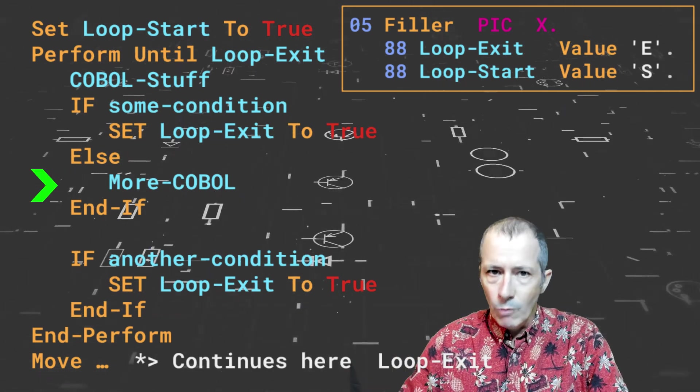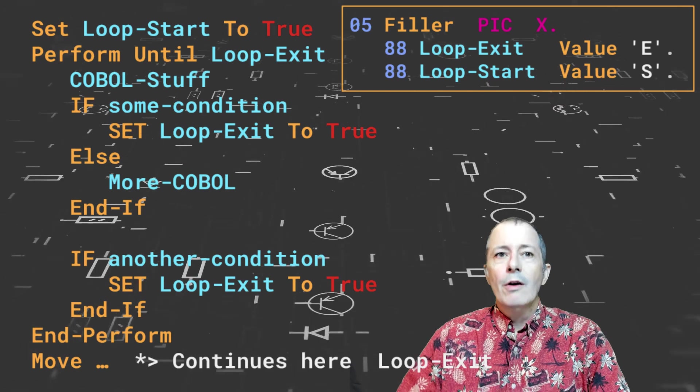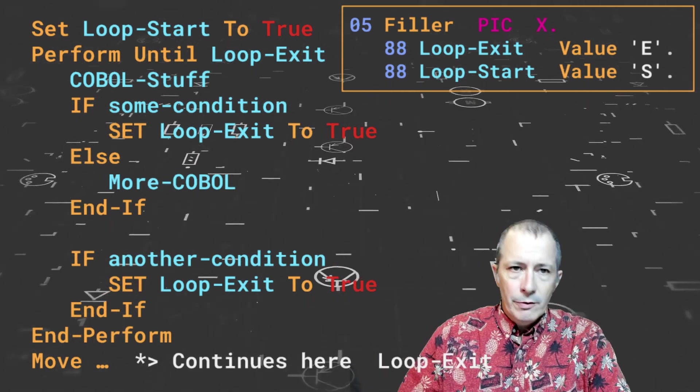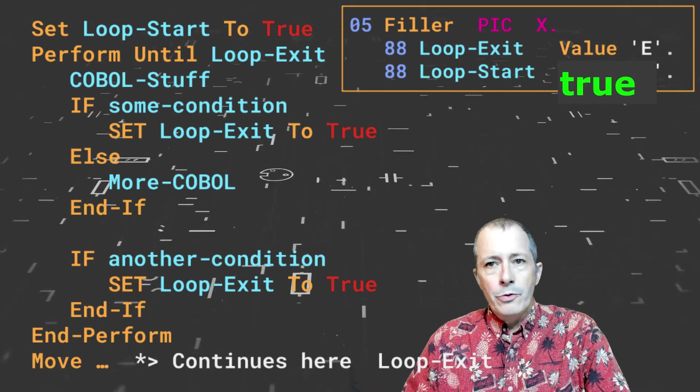If not, do some more COBOL logic, followed by another check to see if it's time to leave. If not, the loop start flag is true, which triggers another iteration of the loop.